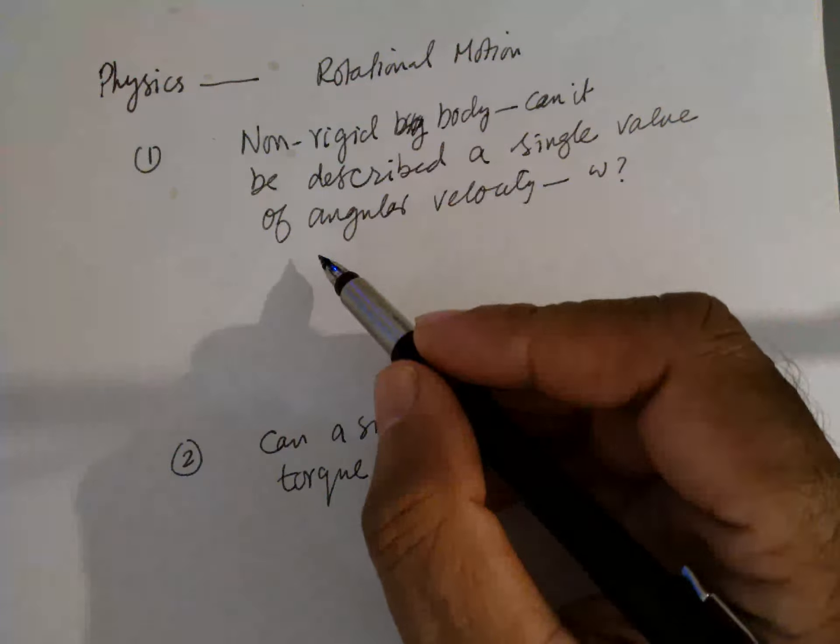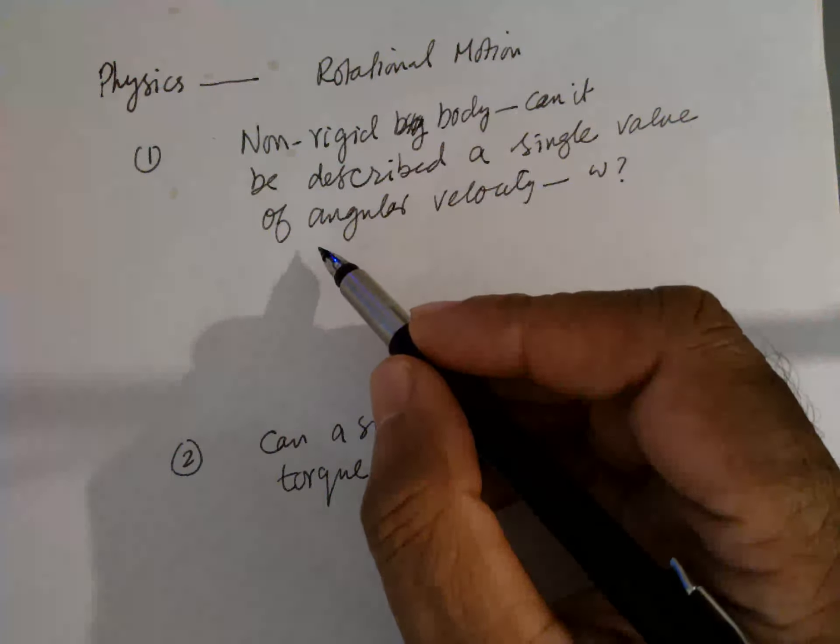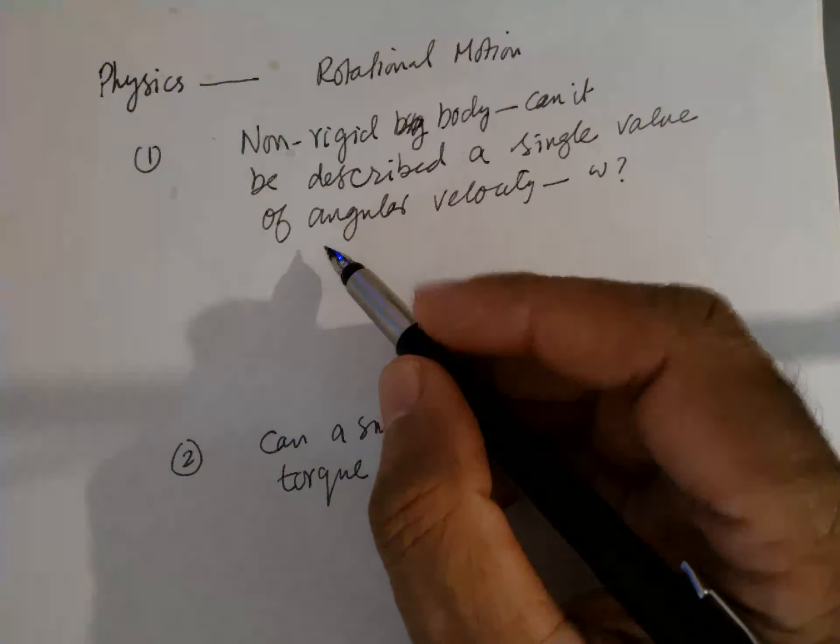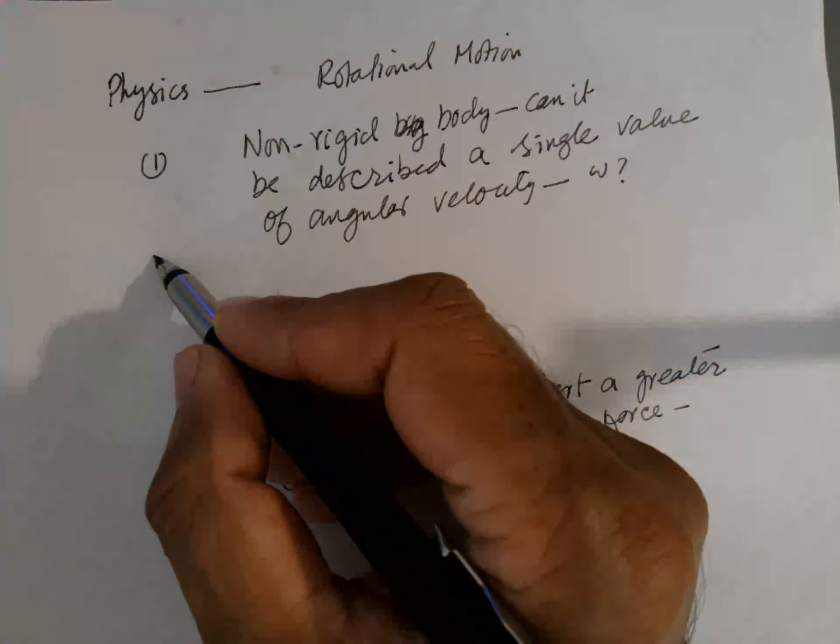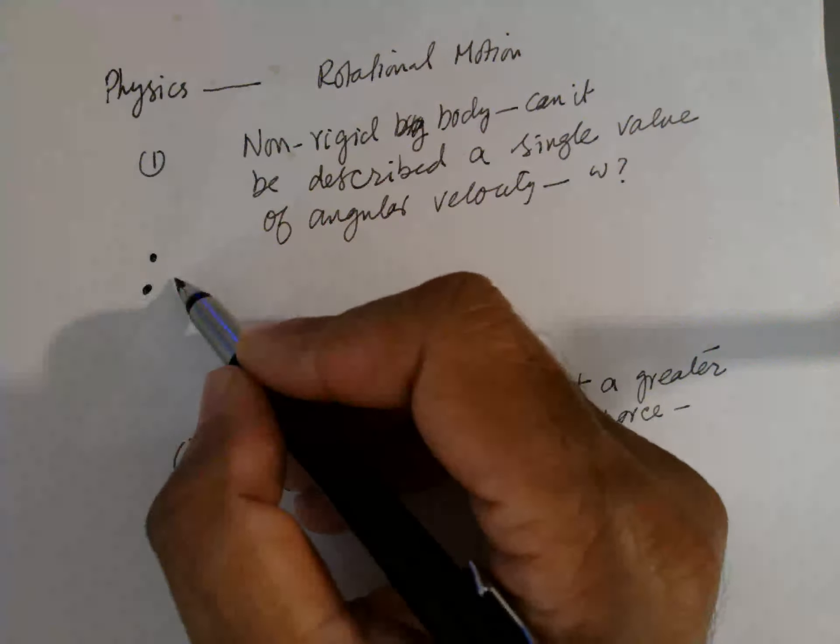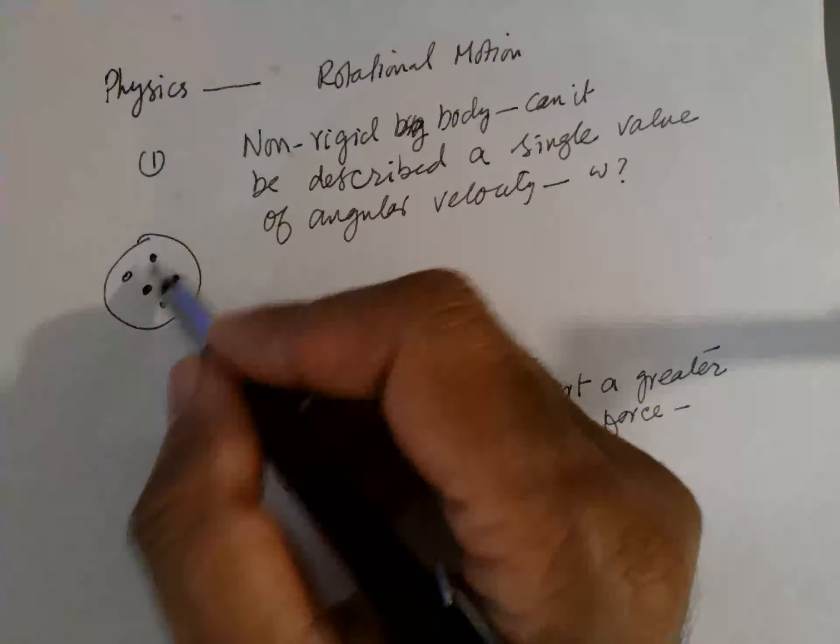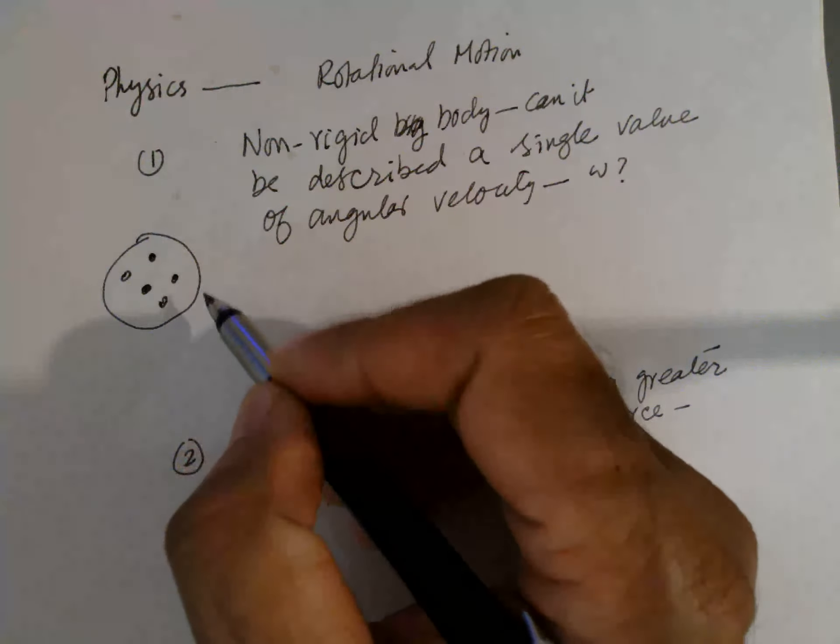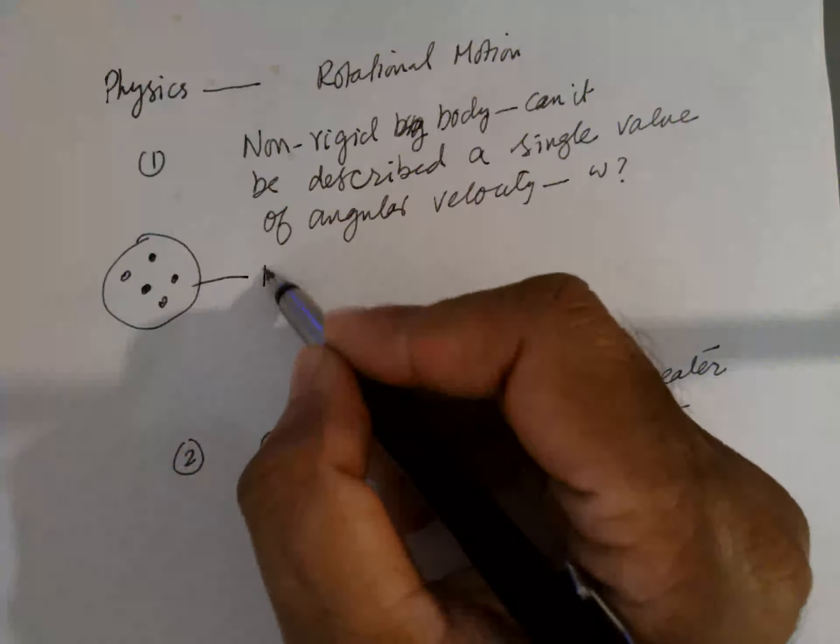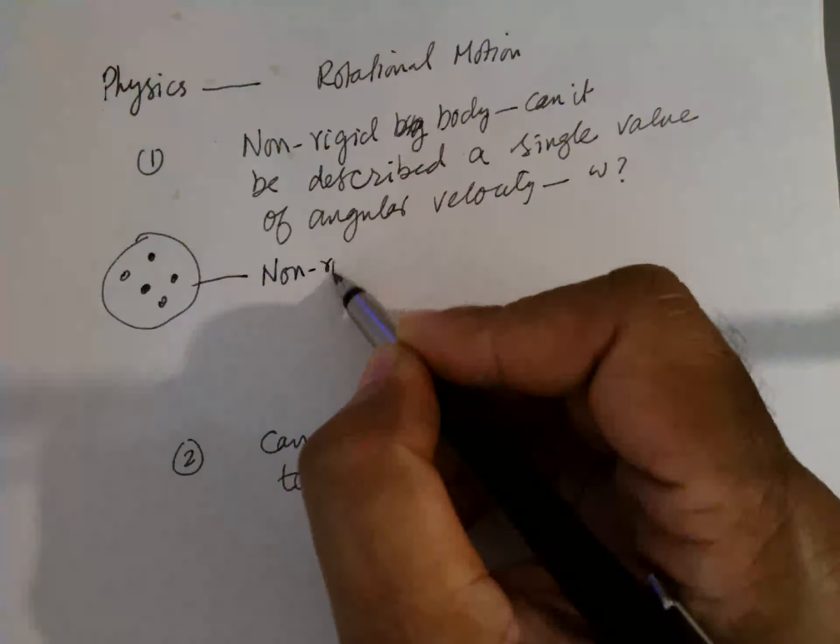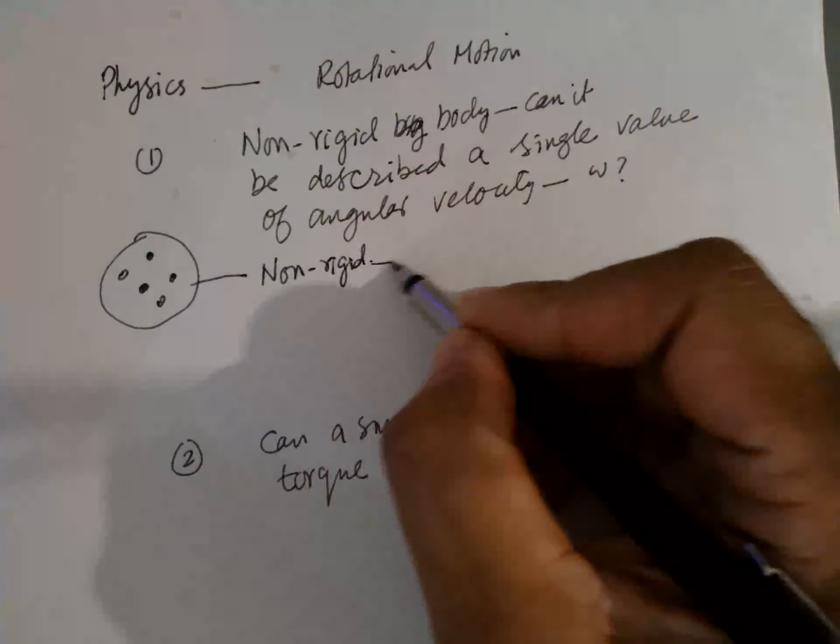A non-rigid body is composed of many bodies. It is a set of scattered bodies. This is non-rigid.